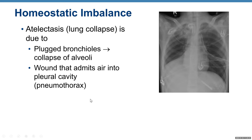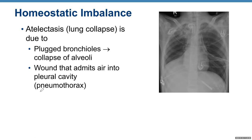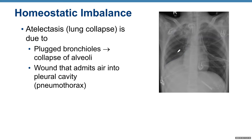Atelectasis is lung collapse. It can result from plugged bronchioles leading to alveolar collapse, or from a wound that admits air into the pleural cavity — pneumothorax. When air enters the pleural cavity, the lung collapses. On imaging, a collapsed lung appears significantly smaller than normal.